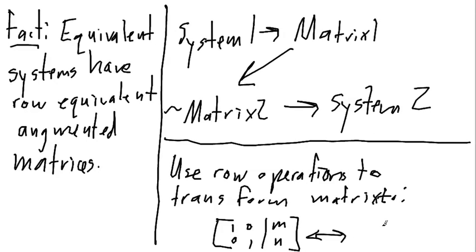Why? Because this corresponds to the simple system X is equal to M, Y is equal to N. So, if we can use row operations to get down to this sort of augmented matrix, then we immediately find the solution to our system.